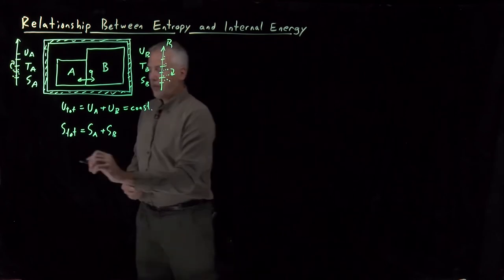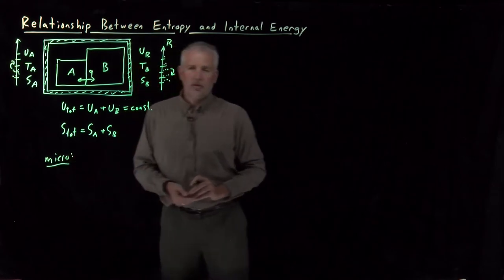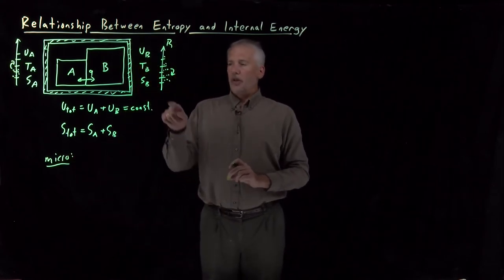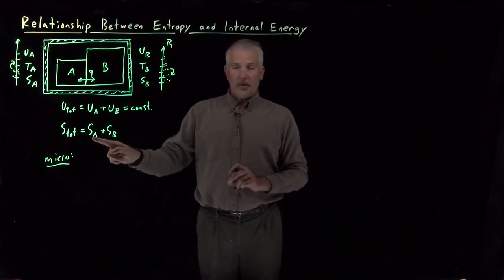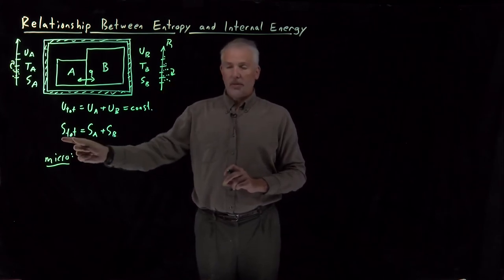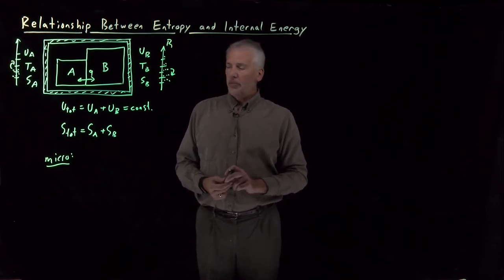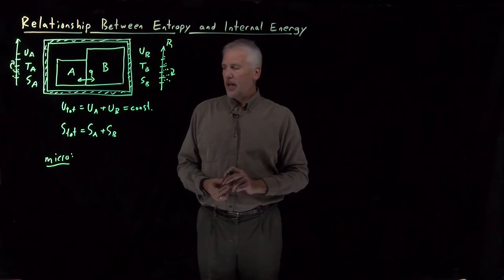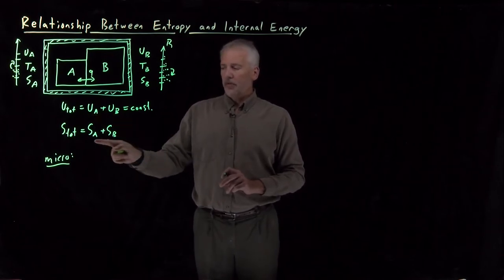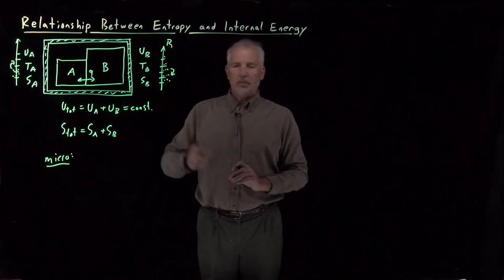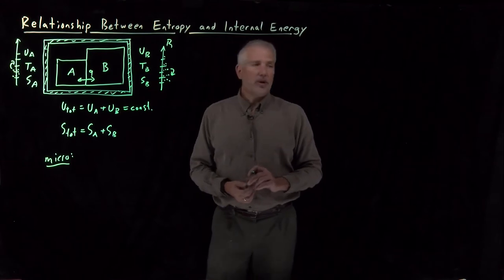Again, from the microscopic point of view, we know what to do. It's just a little bit tedious. We can figure out what distribution of these probabilities maximizes not the entropy of A or the entropy of B, but the sum of the entropy of the two things combined. That's a complicated process in general and not much fun. We'd much rather be able to understand what's going to happen just knowing the values of the energies and entropies and temperatures and so on, the thermodynamic variables.